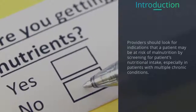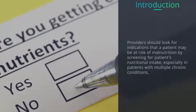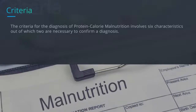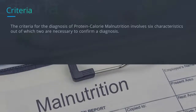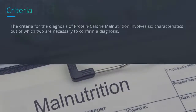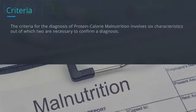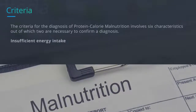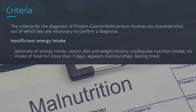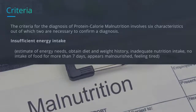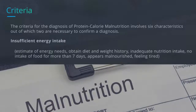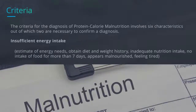Providers should screen for patients' nutritional intake, especially in patients with multiple chronic conditions. The criteria for the diagnosis of protein calorie malnutrition involves six characteristics, of which two are necessary to confirm a diagnosis. The first characteristic is insufficient energy intake — the examiner should estimate energy needs, obtain diet and weight history, and assess for inadequate nutrition intake or no food intake for more than seven days.